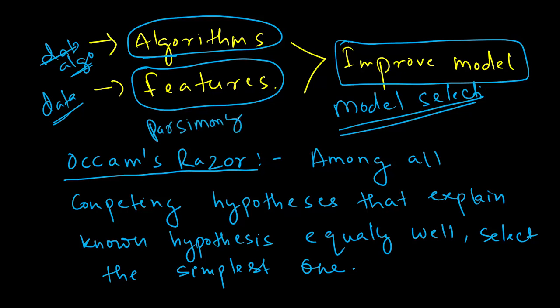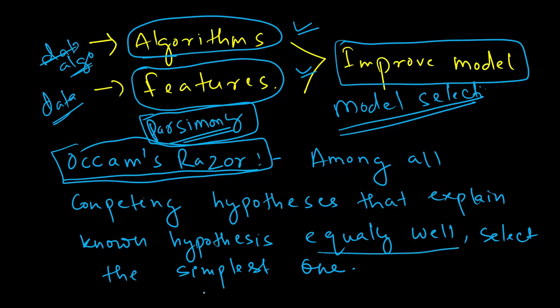What is known as Occam's Razor and is also in some form we call that parsimony. The reason why we need to keep Occam's Razor theory or parsimony in mind is because while exploring algorithms and features, we often miss out on this important philosophy which has been in use for many centuries. It says that among all competing hypotheses that explain known hypothesis equally well, select the simplest one.